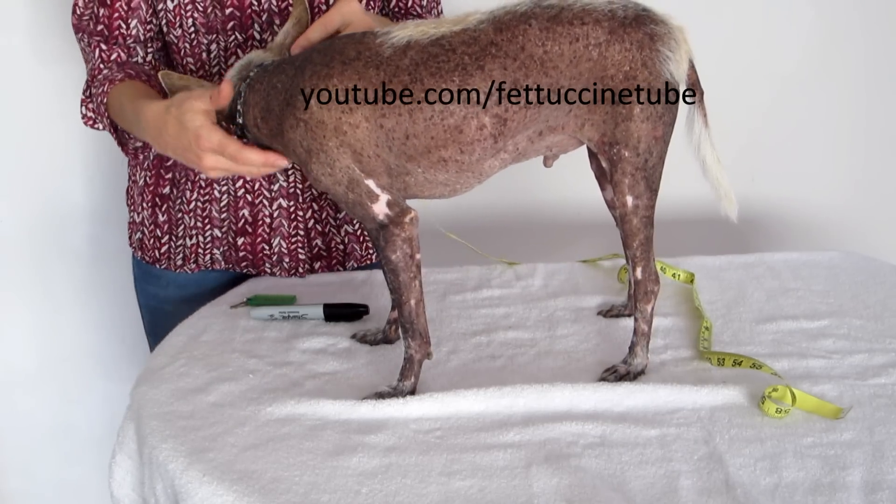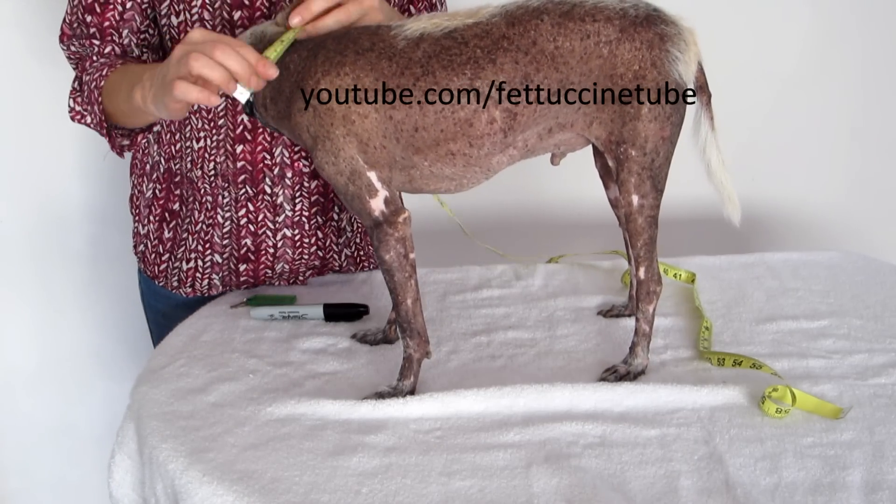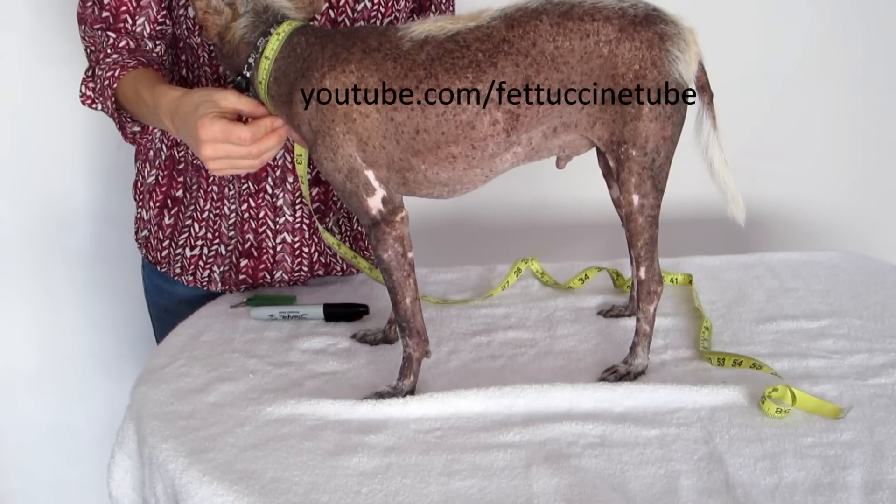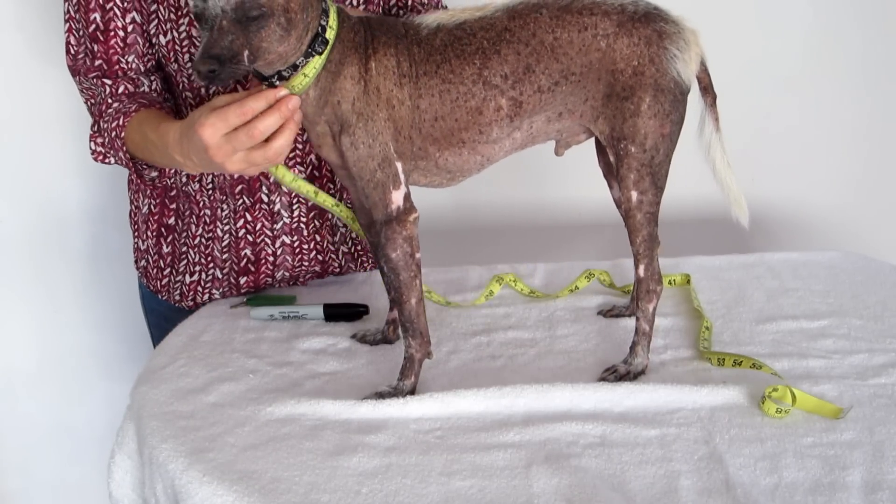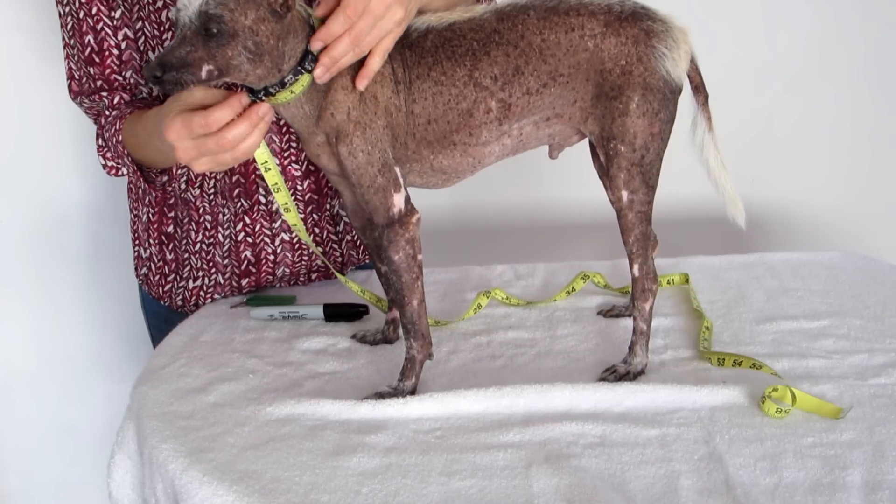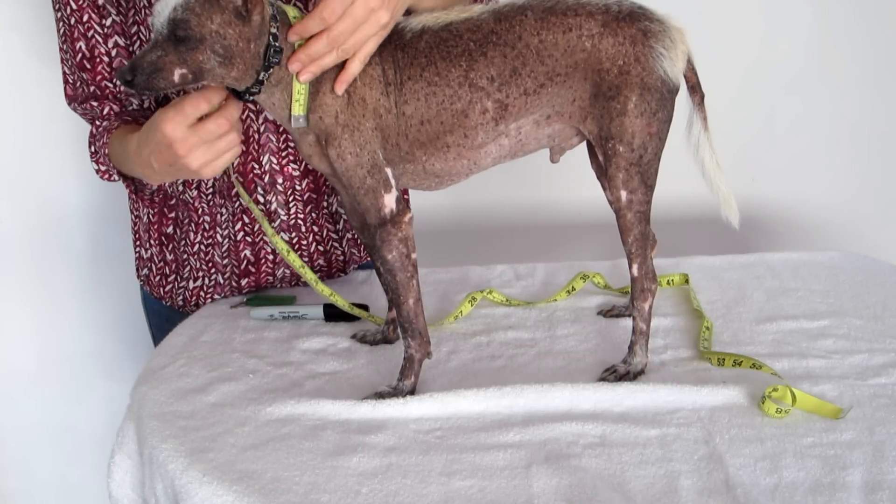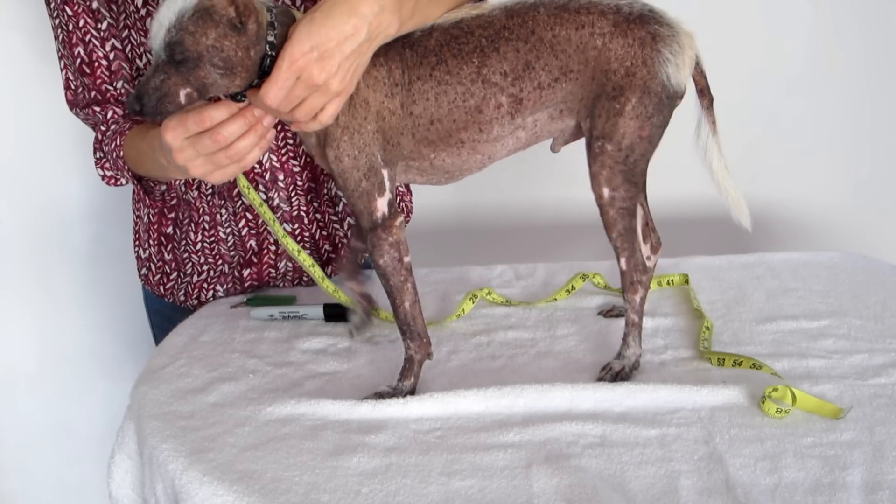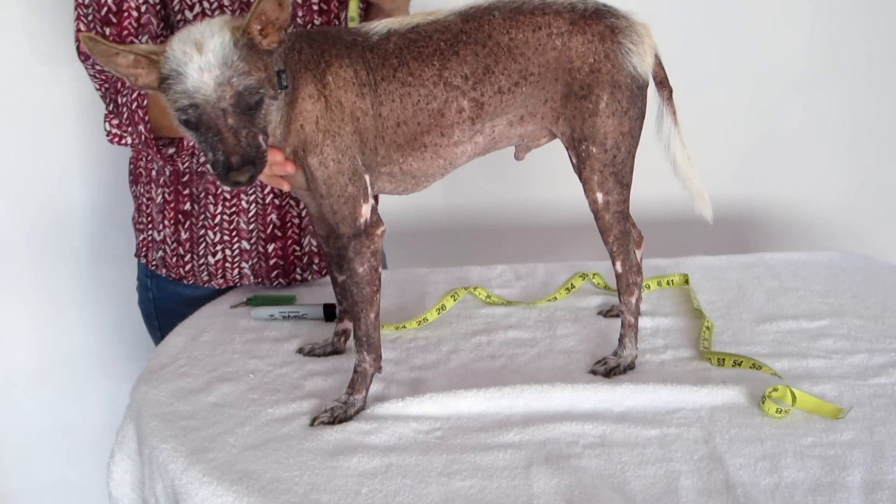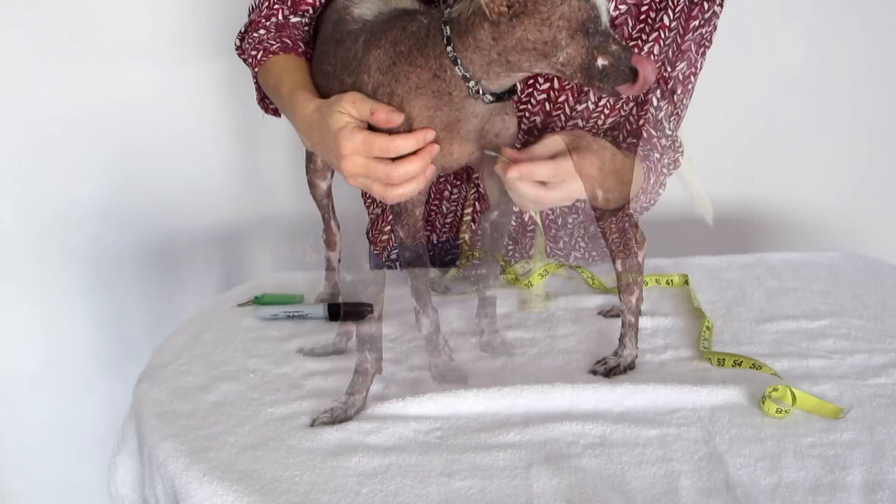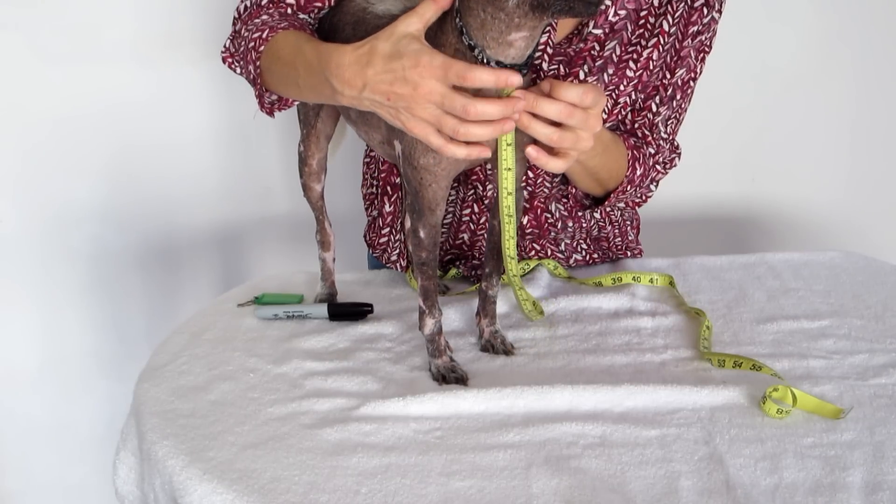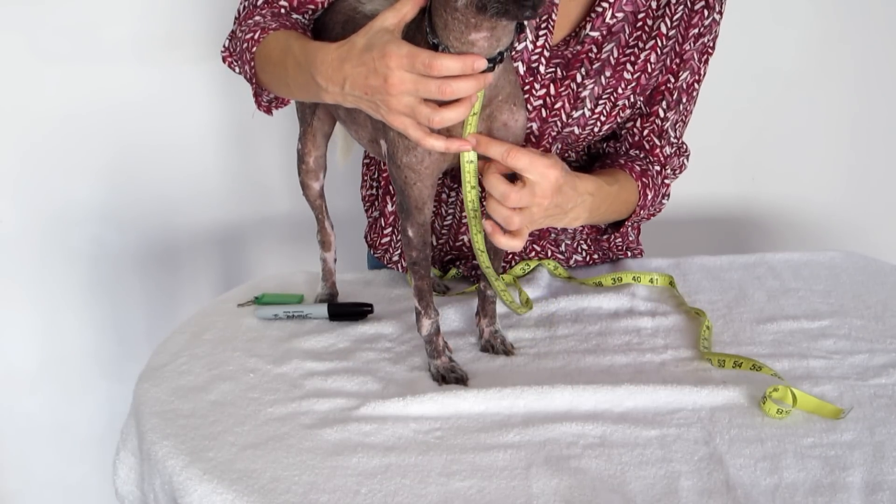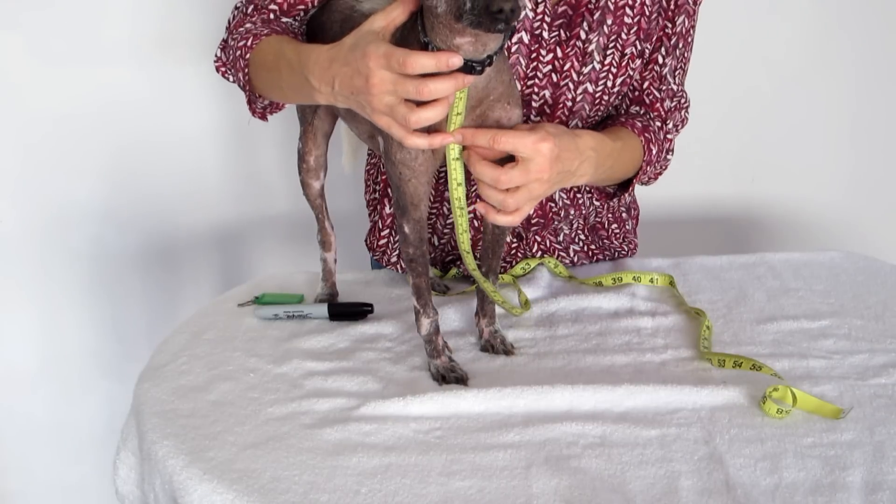Now we're going to take the neck circumference around where you want the clothing to be. Of course. So just wrap it around his neck, again not too snug and not too loose. And I'm putting it around where his collar, where I want his collar to be, to that bump which I call the wishbone.